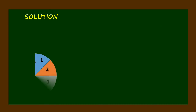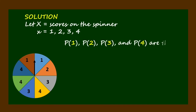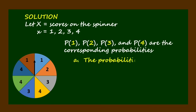Here's the solution. Let uppercase X be the scores on the spinner, and lowercase x be the values 1, 2, 3, and 4. P(1), P(2), P(3), and P(4) are the corresponding probabilities, and the probabilities obtained are as follows.